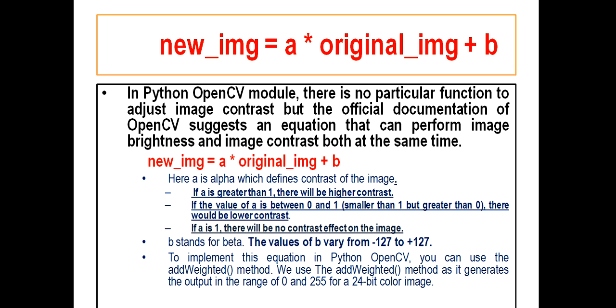Now let's discuss the equation in details. Here A and B seem to be unknown to us, so let us discuss about them. A is alpha, which defines contrast of the image, and there are three conditions with respect to the value of A. If A is greater than one, there will be higher contrast. Do note it. If A is greater than one, there will be higher contrast.